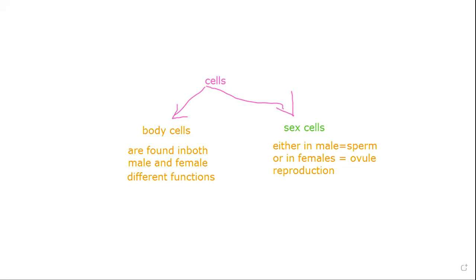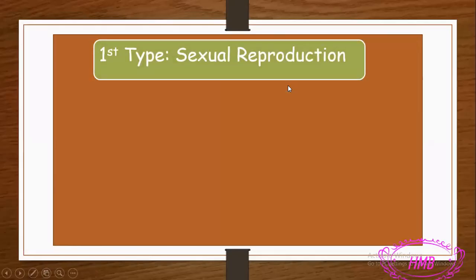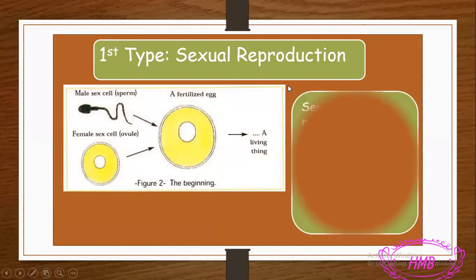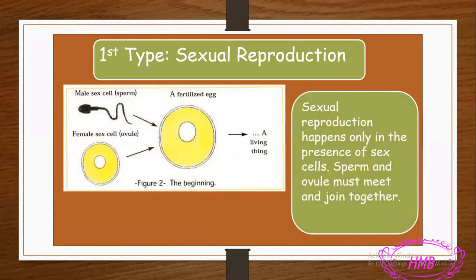Now let's look at the first kind of reproduction. For sexual reproduction, I have two living things: the male and the female.